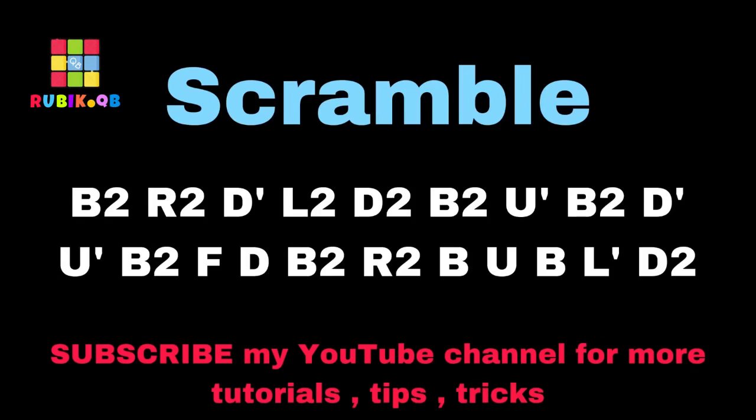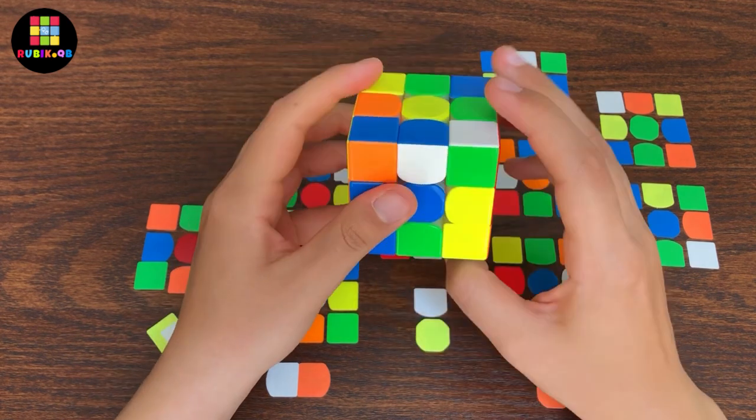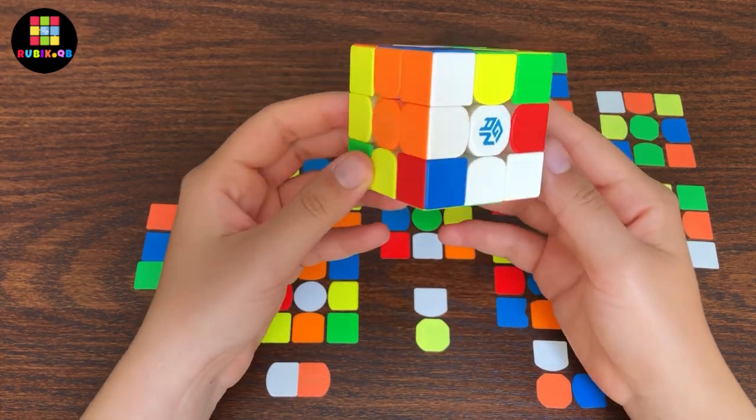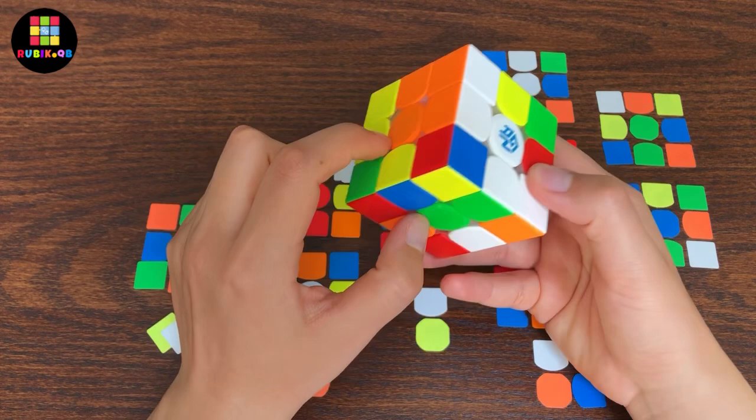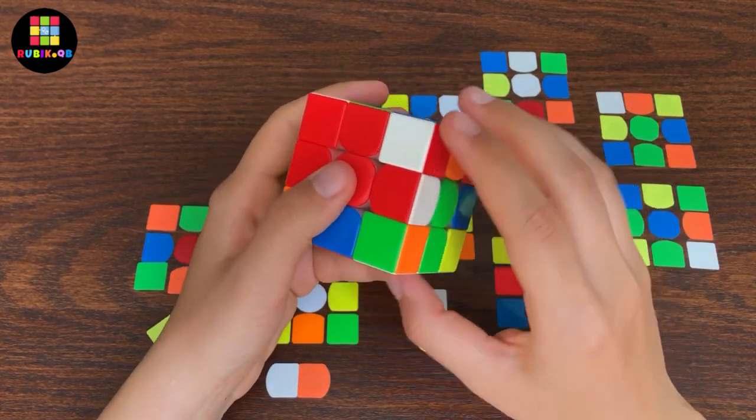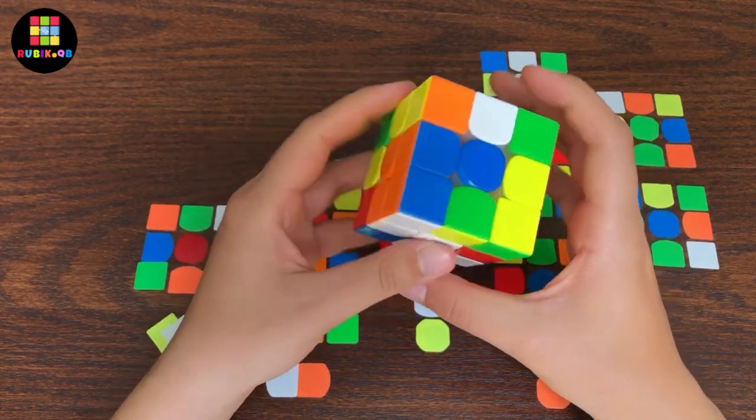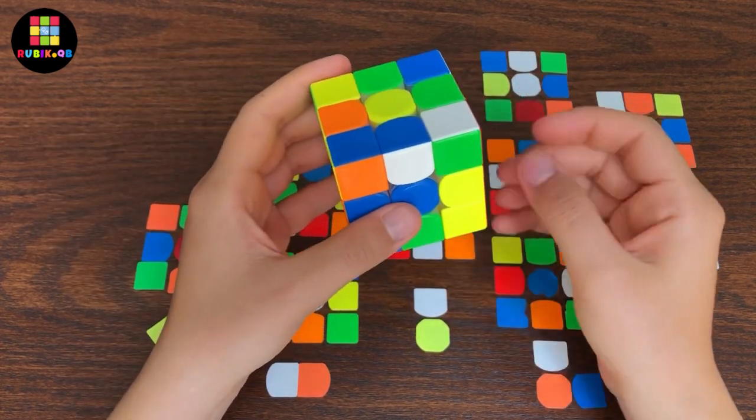The cross pieces are there, there, there, and there. As you can see, this is a super easy cross. These two are solved, this one only needs one move, this F2L pair is already solved, so the only bad edge is this one.